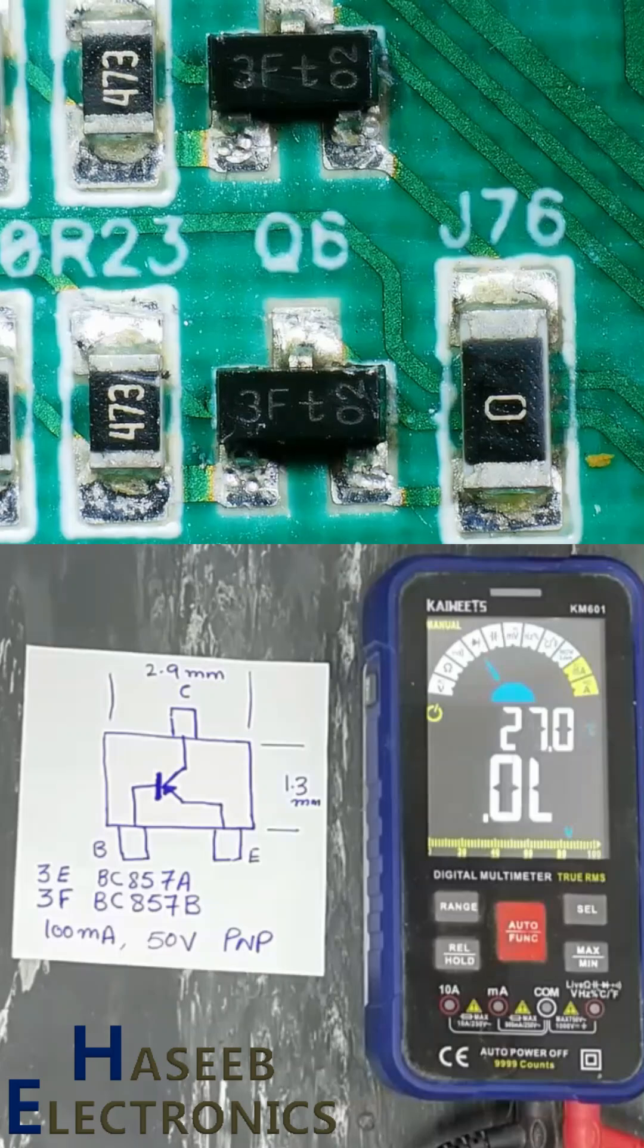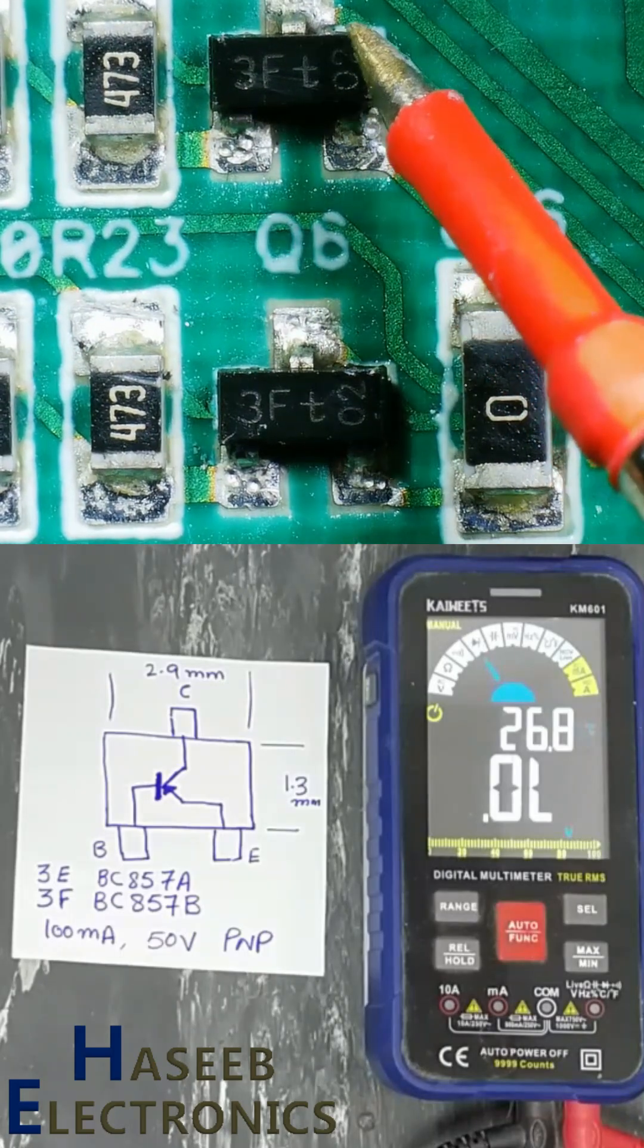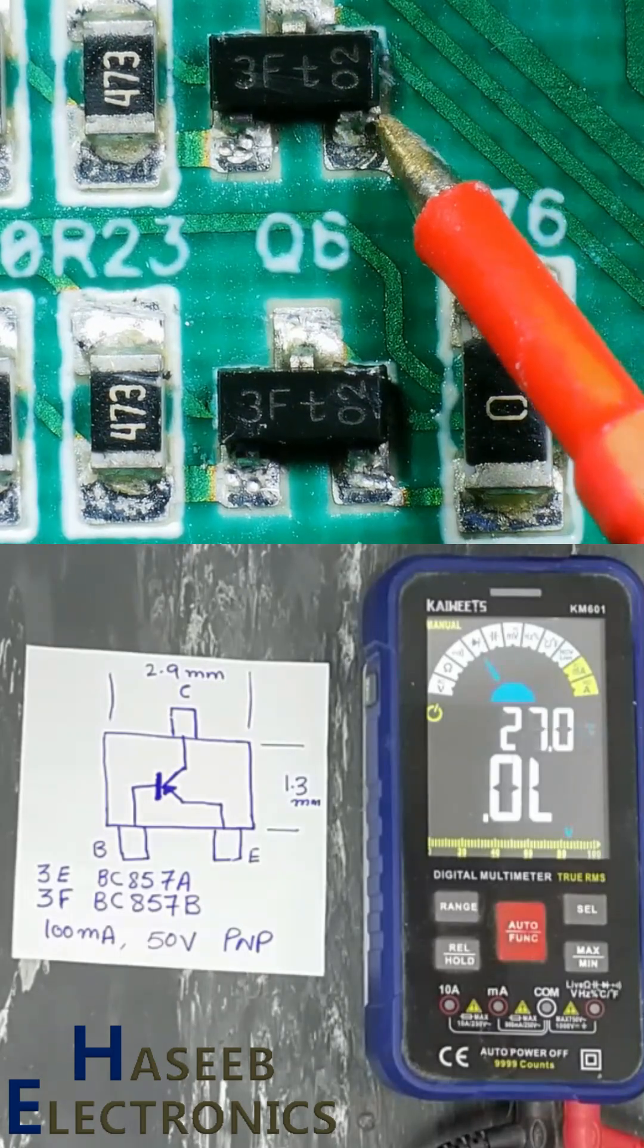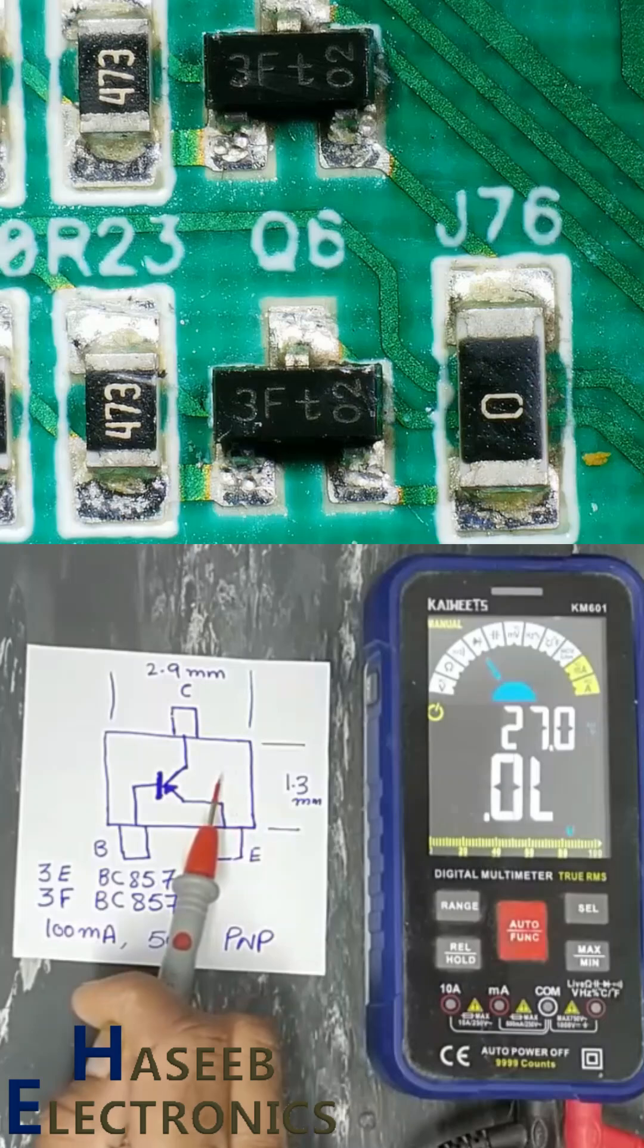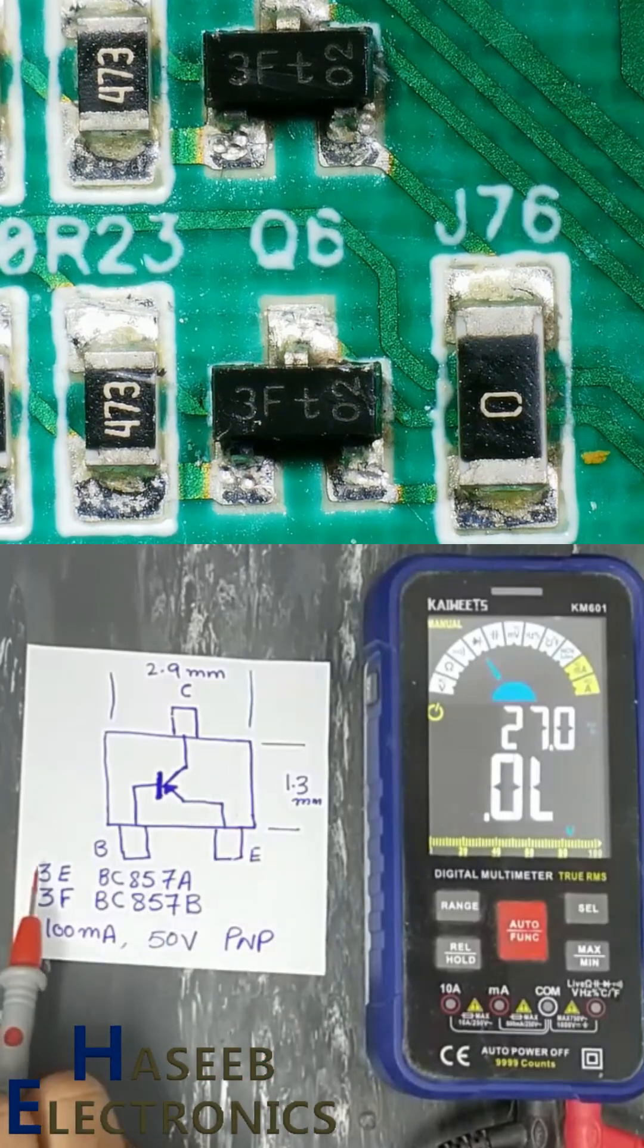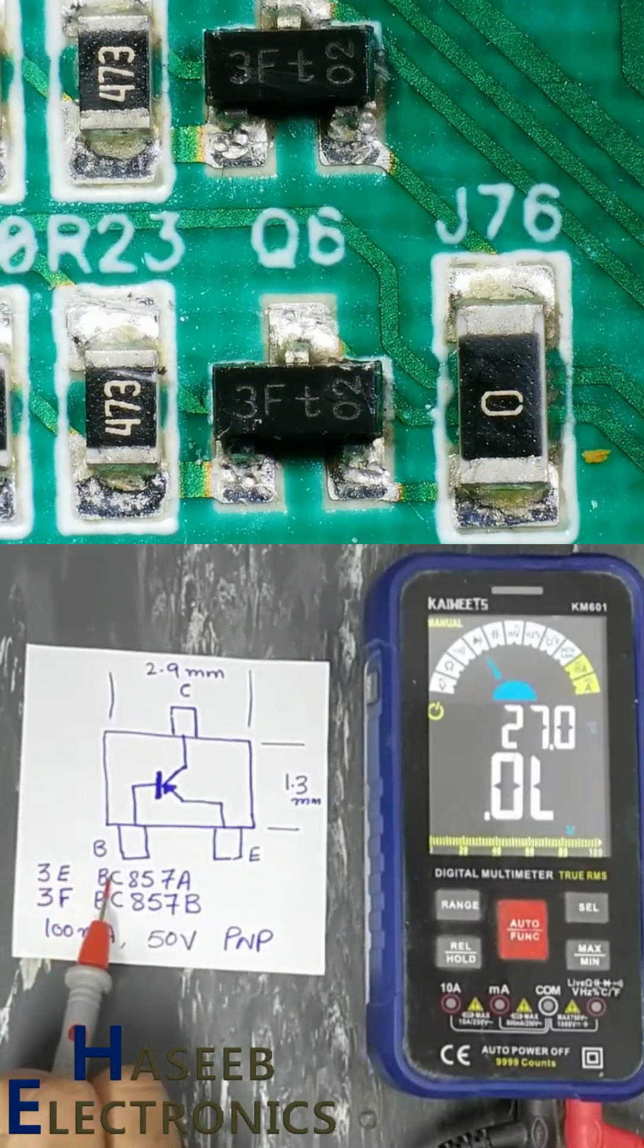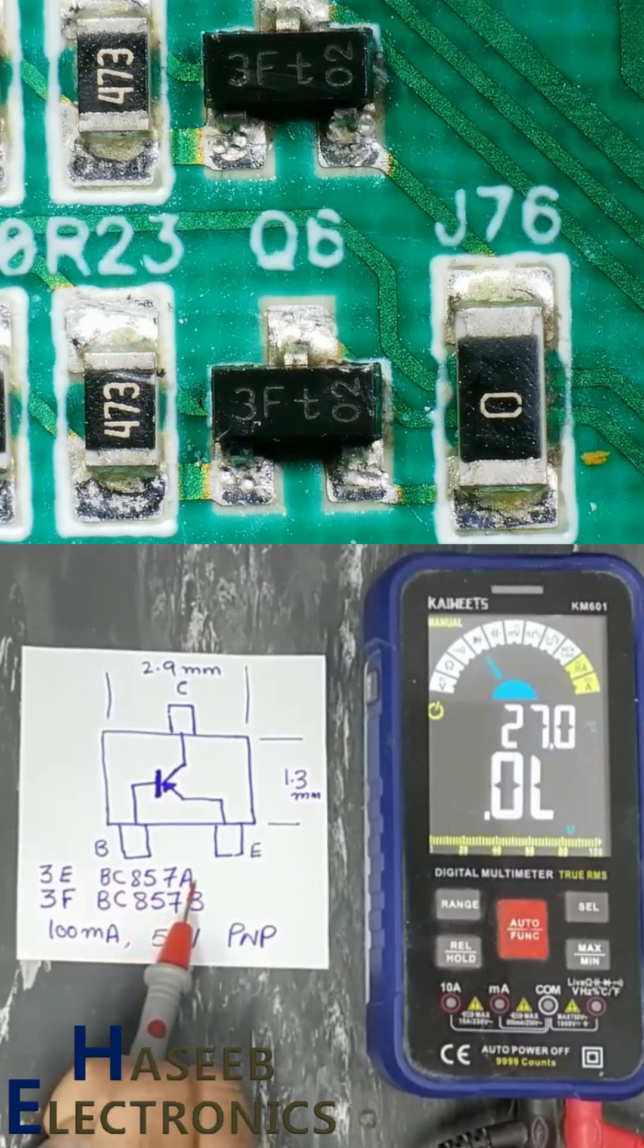2.9mm width, from here to here 1.3mm. It is SOT23 package. If marking is 3E, that is BC857A.